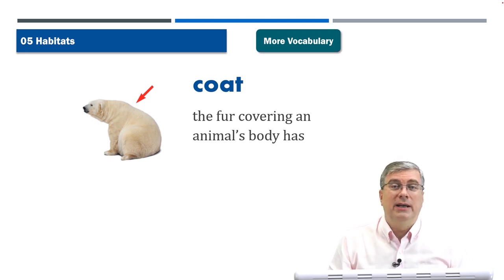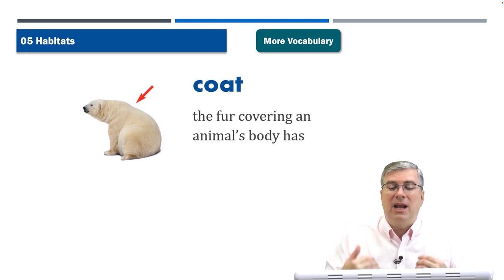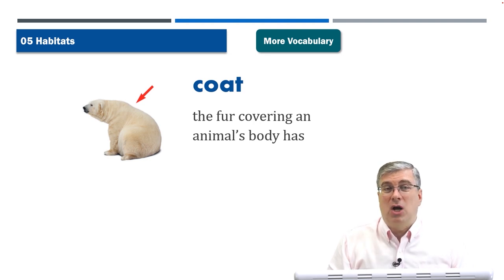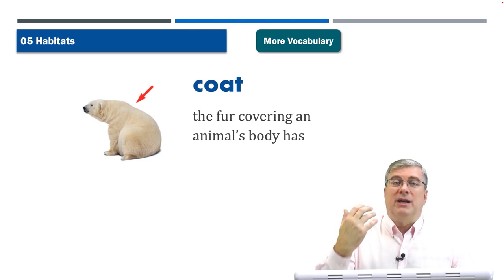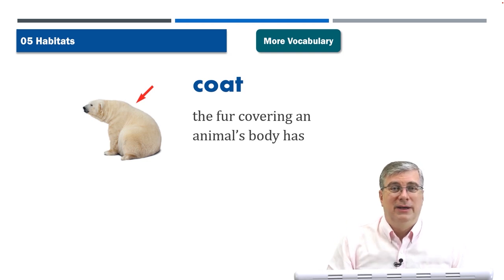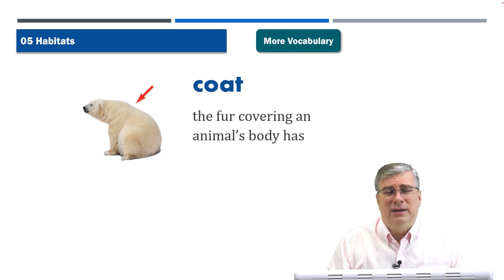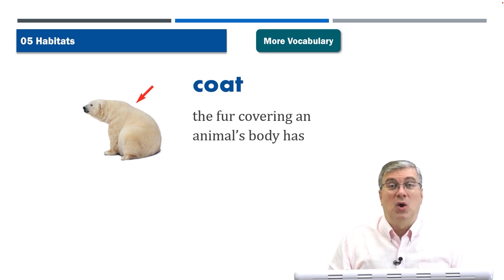'Coat' — we wear a coat when it's cold, but we can also use 'coat' to describe an animal's fur. A coat is the fur covering an animal's body. A polar bear has a very thick coat — thick hair and fat that keeps it warm in the tundra. Our dog is a beagle, and in the summertime I feel sorry for her because she's covered in fur and can't take her coat off. She always sits under the air conditioner because it's so hot. Coat — the fur covering an animal's body.